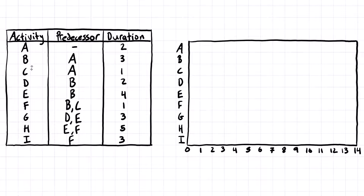So in the table of dependencies, we have the activities, each of the activities' predecessor relationships, and the duration of each individual activity. What we're not given is the overall project duration and the day that each of these activities start and finish on, which we'll be able to determine from the Gantt chart. If you're doing it by hand, using graph paper is a pretty good idea, or at least setting up a coordinate axis that has the days going across the bottom and the activities on the left side, preferably in the same order that you've been given in the table of dependencies.